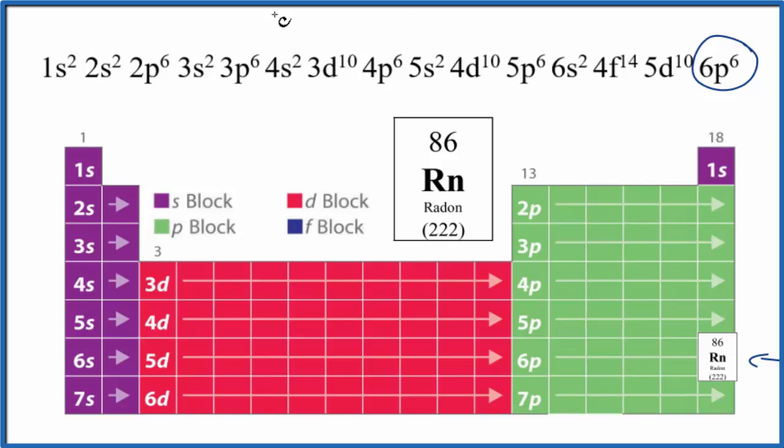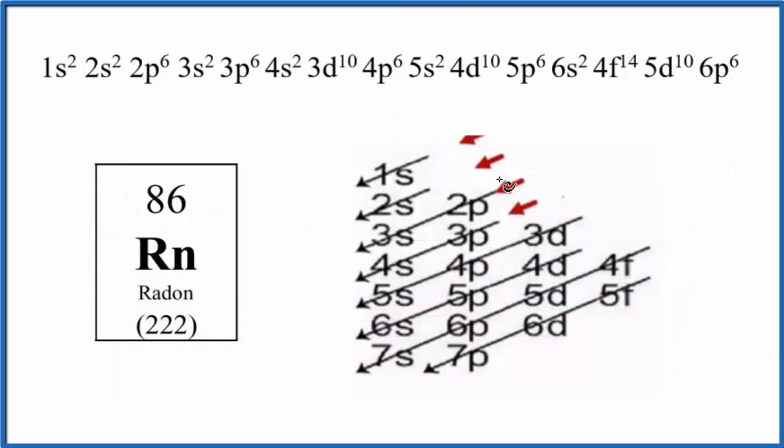We can also use the diagonal rule to figure the rest of this out. If you need help using the diagonal rule there's a link in the description. What we do is we follow these arrows here, so we have 1s, s holds up to 2 then it's full, so here's our 1s2.